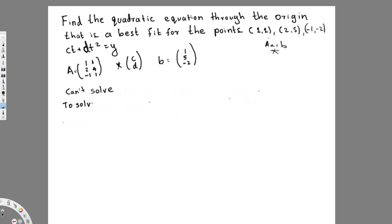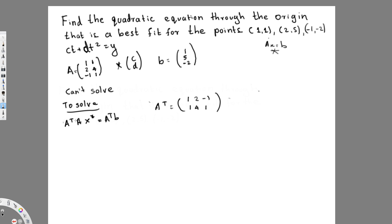In this case we can only find the approximate, nearest value. To solve this we use a different equation to find the approximate value. That equation is A transpose A x* equals A transpose b. To do this, first we have to find A transpose, which is simply the flip of A. So A transpose is going to be [1, 2, -1] on top and [1, 4, 1] on the bottom.